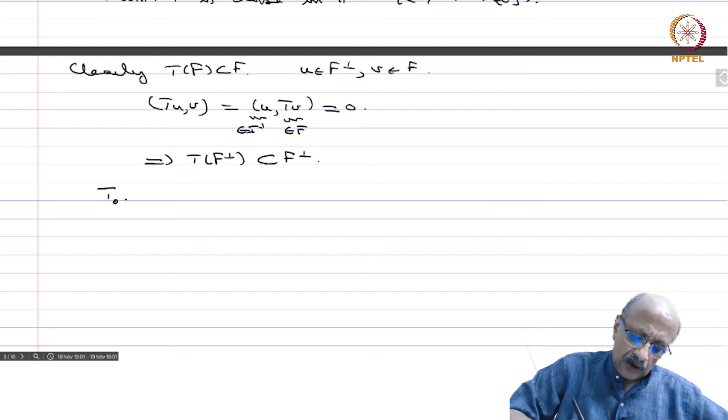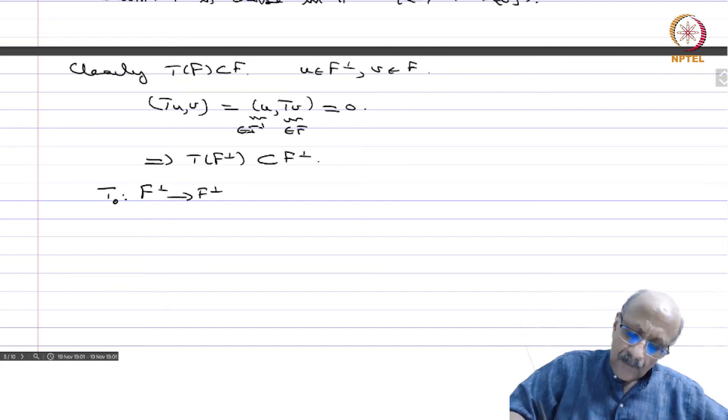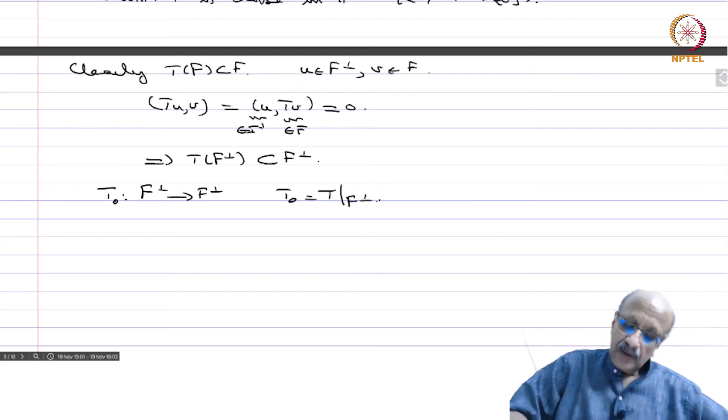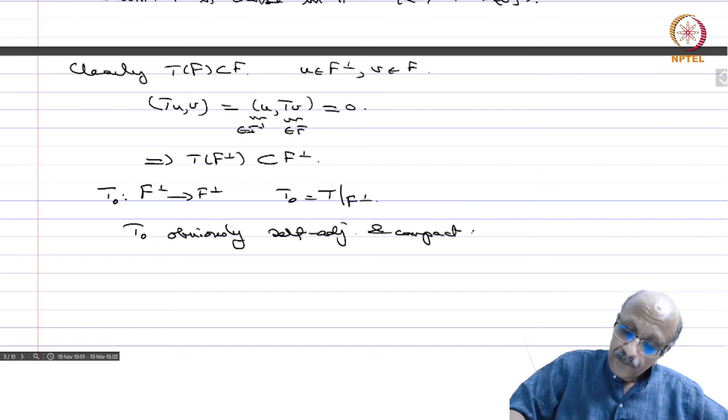Now you take T_0 from F perp to F perp, T_0 equals T restricted to F perp. This T_0 is obviously self adjoint and compact.